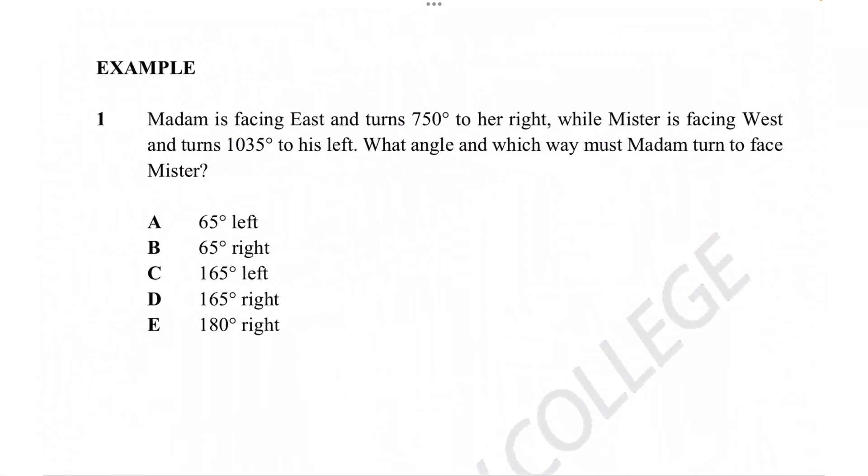So let's see if we can put all our knowledge to the test with this example question. Madam is facing east and turns 750 degrees to her right, while Mister is facing west and turns 1035 degrees to his left. What angle and which way must Madam turn to face Mister?